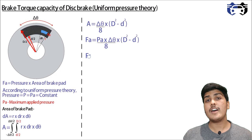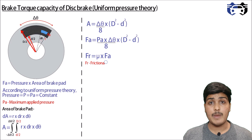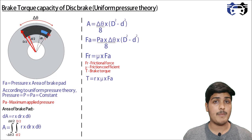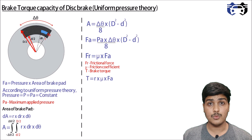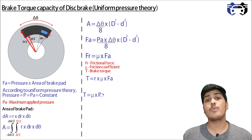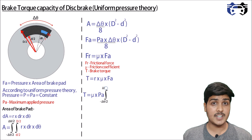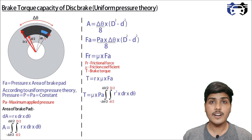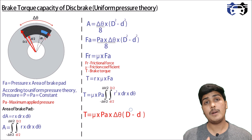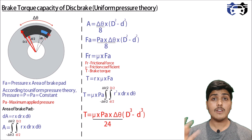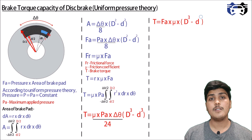The frictional force fr equals mu multiplied by fa. Torque is given by r multiplied by fr, so torque equals r multiplied by mu multiplied by fa. Since the brake pad radius varies from small d/2 to capital D/2, we integrate to get brake torque: torque equals mu multiplied by pa, integrated from minus delta-theta/2 to plus delta-theta/2 and from small d/2 to capital D/2 of r²·dr·d-theta. This gives torque equals mu multiplied by pa multiplied by delta-theta multiplied by (D³ minus d³) divided by 24.